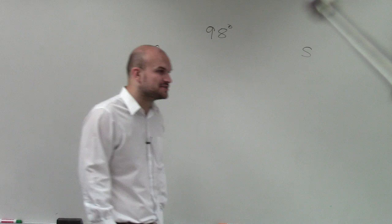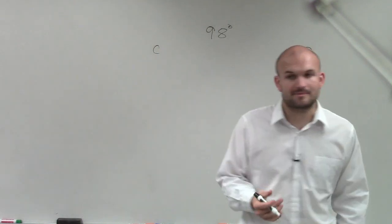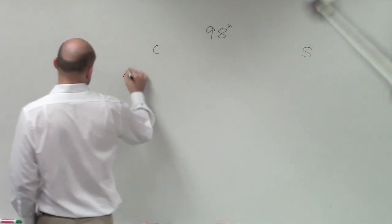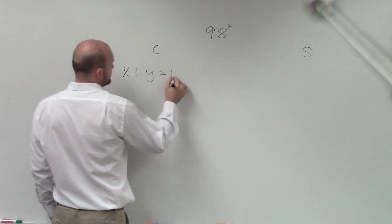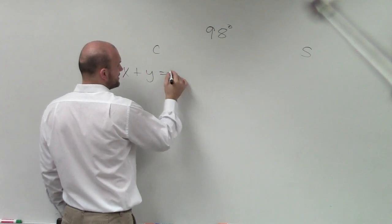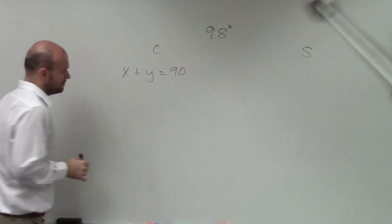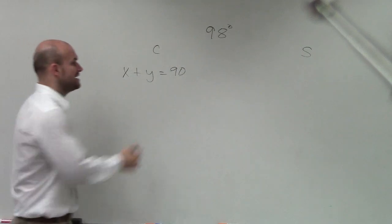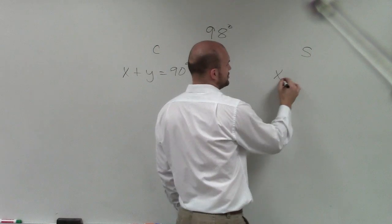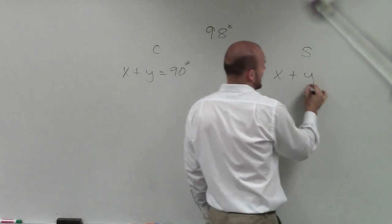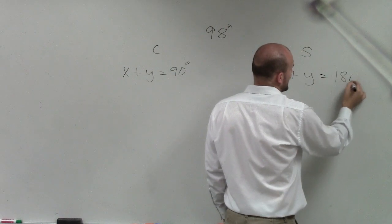So remember, the definition of a complement is two angles that add up to 90 degrees — so x plus y equals 90 degrees. And the supplement is two angles that add up to equal 180 degrees.